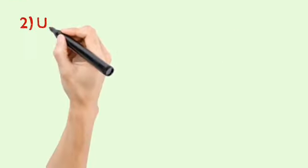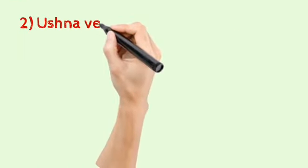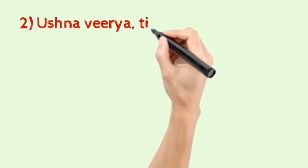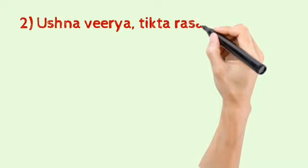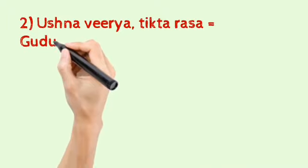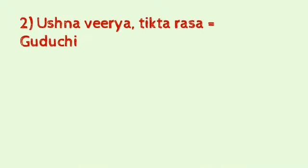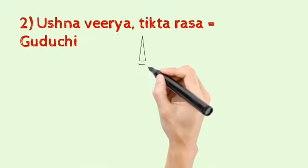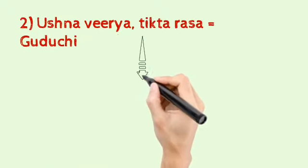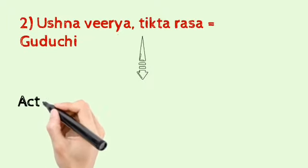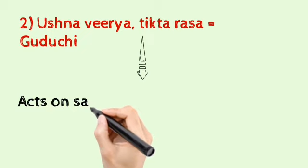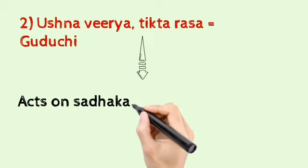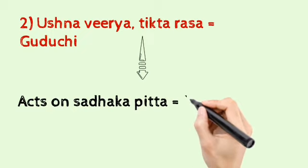The next classification includes Ushna Virya Dravya and Tikta Rasa Dravya; an example is Guduchi. Guduchi will act on the Sadaka Pitta and helps to improve the Grahana and Smarana.